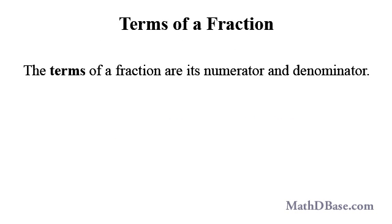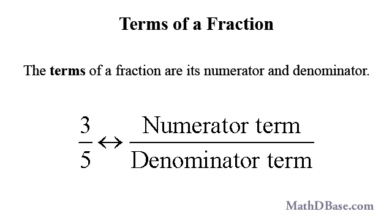The terms of a fraction are its numerator and denominator. In the fraction 3 over 5, 3 is the numerator term and 5 is the denominator term.